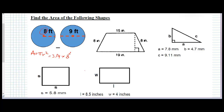8 squared means 8 multiplied by 8, which equals 64. So 3.14 times 64 equals 200.96 feet squared. Don't forget the units!